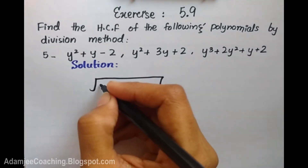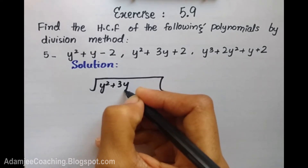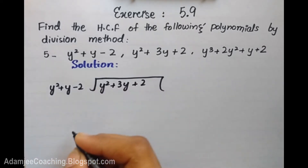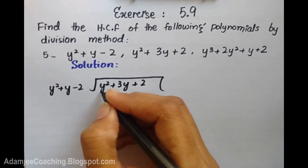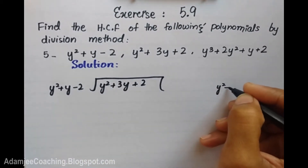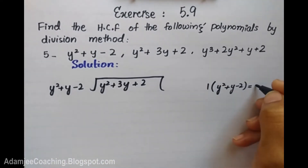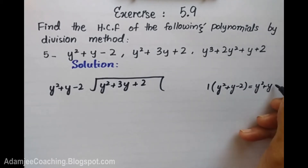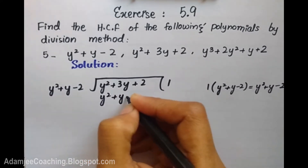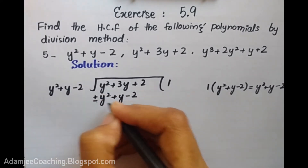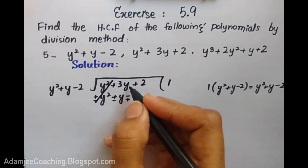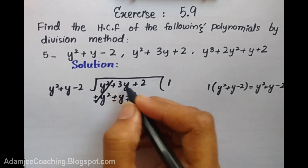The dividend is y² + 3y + 2 and the divisor is y² + y - 2. I take the first term and cancel it. When I multiply y² + y - 2 by 1, and then change the sign to minus, I get minus y² minus y plus 2.